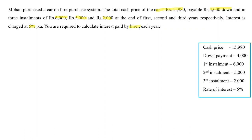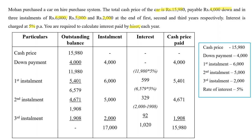Hirer means hire purchaser. When all information is given — cash price, installment amount, and rate of interest — we calculate using a table with five columns: Particulars, Outstanding Balance, Installment, Interest, and Cash Price Paid. In the Outstanding Balance column we write the amount pending to be paid by the buyer to the seller. In the Installment column we write the installment amount. In the Interest column we write the interest. In the Cash Price Paid column we write the cash price paid in each installment.